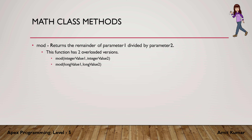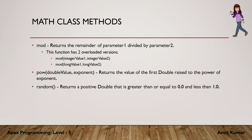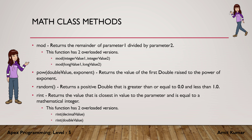pow, or power function, returns the value of the first double raised to the power of the exponent. The random method returns a positive double that is greater than or equal to 0.0 and less than 1.0 — a random value anywhere between 0.0 and 1.0.